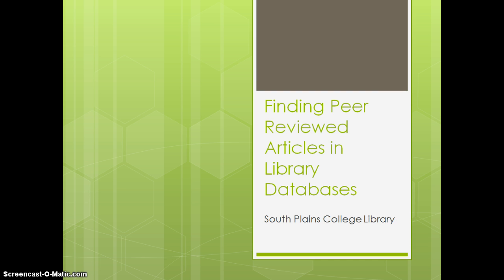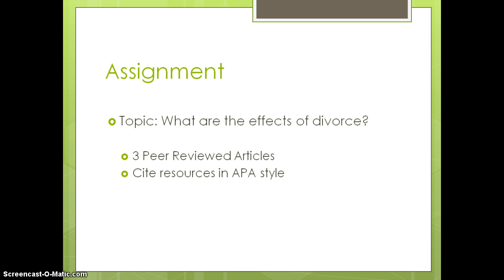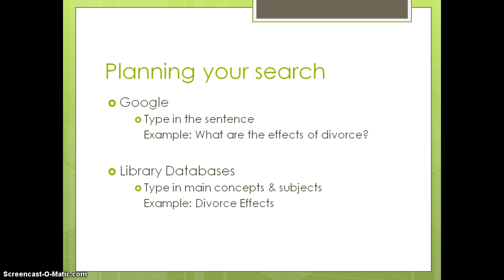Starting off, the first thing you do is you get your assignment. Often your assignment will be in the form of a question or a phrase. With this one, it's: what are the effects of divorce? Your teacher is requiring three peer-reviewed articles and to cite your sources in APA style. Usually the first thing people do is quickly go to Google and type in the sentence, but there's a better way.